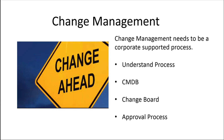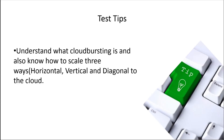Change management is also important — we want to be aware of change processes, because that can certainly affect the availability of our cloud services and our SLA support agreements. For test tips, know terms like cloud bursting, know the difference between horizontal, vertical, and diagonal scaling, and be able to identify SLAs. The main points are really focused on scaling, availability, and related KPIs.